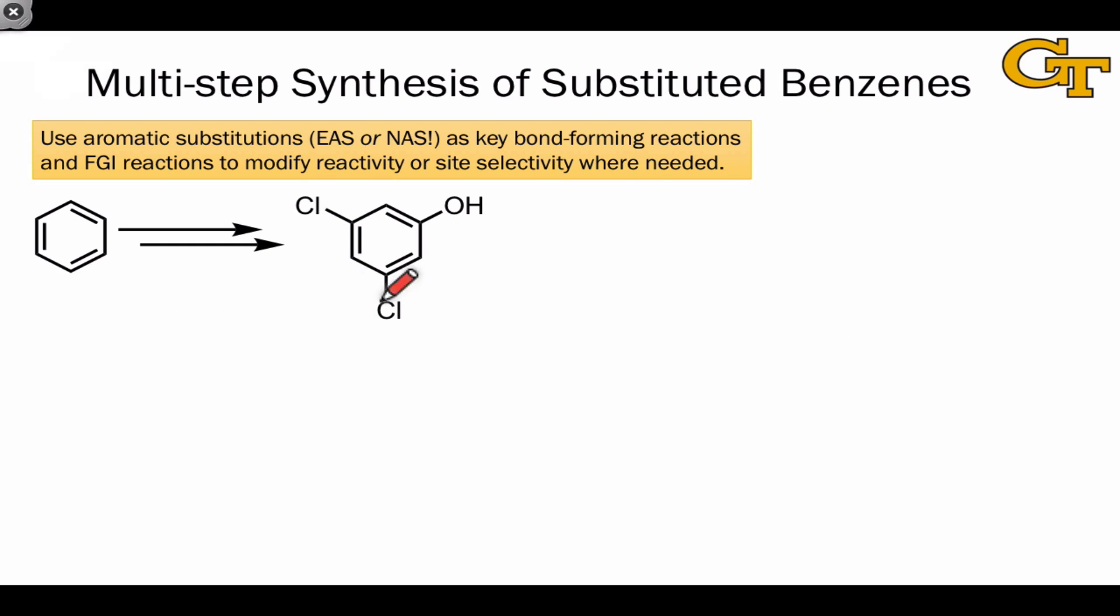In this final example, we have this intriguing situation where three groups that direct ortho para are oriented meta to one another in the desired target. This seems like an impossible situation to achieve, and by direct substitution of benzene, it is not possible. If we install, for example, a chlorine to make chlorobenzene, that's going to direct ortho para, preventing meta substitution, which is what we want.